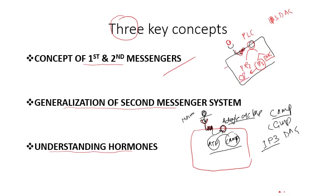IP3 will stimulate calcium release from the endoplasmic reticulum, or will open the channel so there will be an influx of calcium into the cytosol. DAG will stimulate a kinase enzyme. In the same way, cyclic AMP also activates a kinase enzyme, and these kinase enzymes then drive the further process of transcription, translation, and so on.